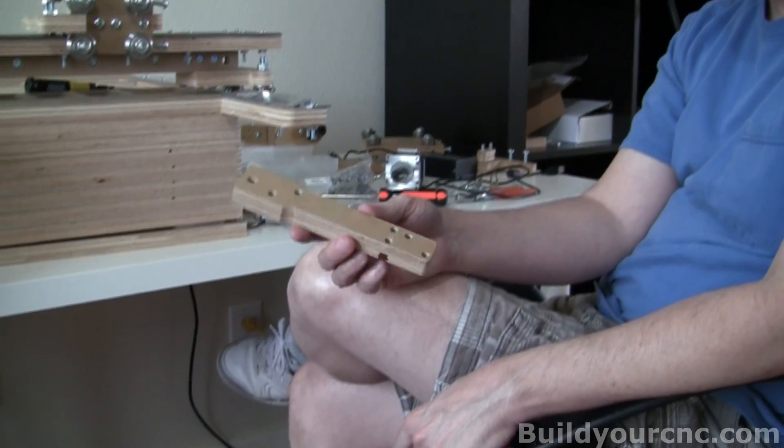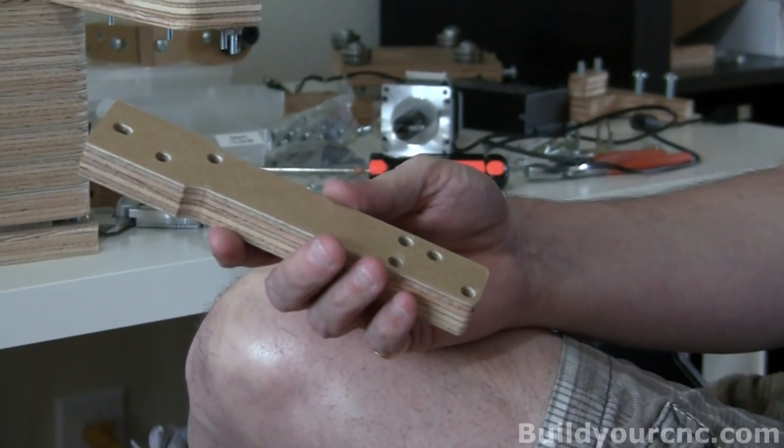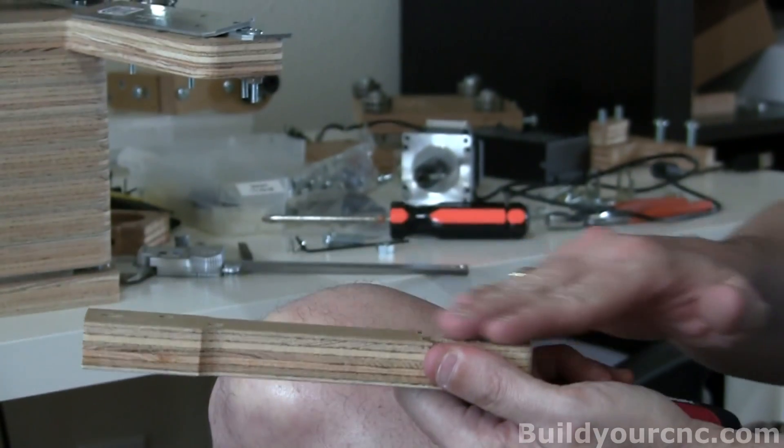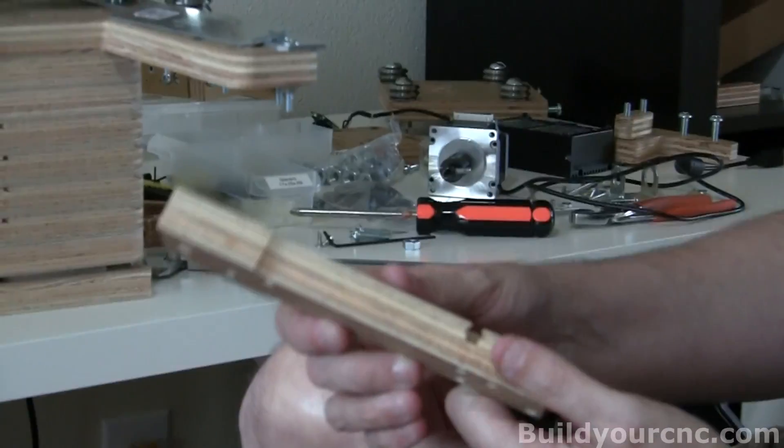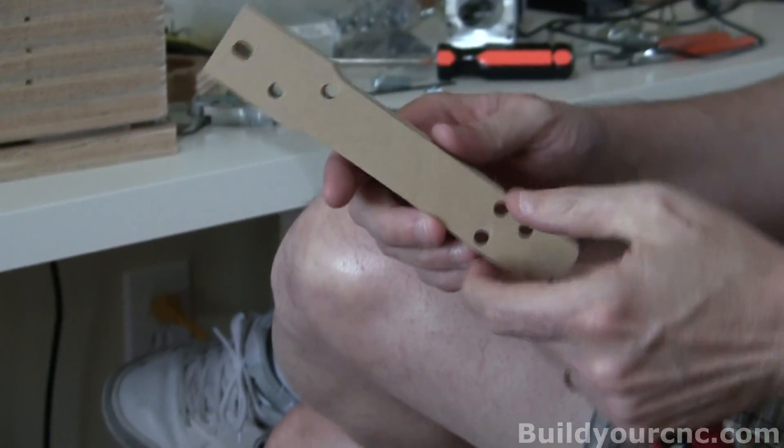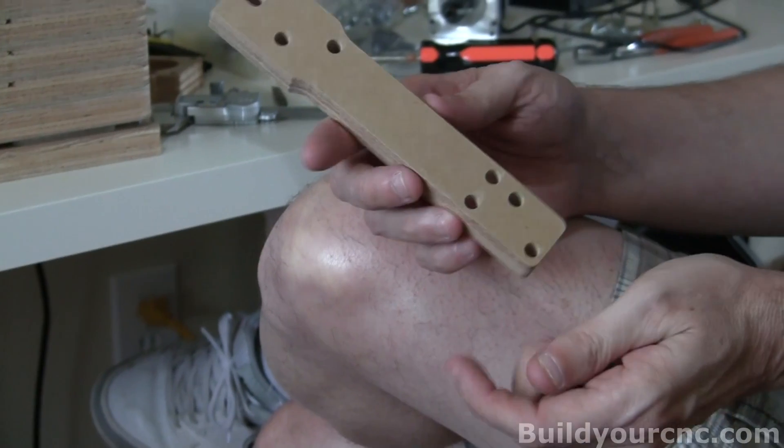Prepare this part for further assembly. We're going to be putting the rail on this side for the Z-axis. This is the Z-axis rail support piece. It's also going to have an A-axis mount for the motor.